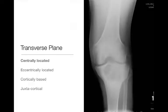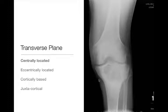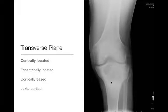In the transverse plane, we describe whether the lesion is centrally located — as in this case where we see a lesion centered in the proximal tibia — whether it's eccentrically located, cortically based, or juxtacortical. Here we have a geographic lytic lesion with a narrow zone of transition and a non-sclerotic border, centered in the proximal tibia in the metaphysis and extending into the epiphysis. This is an example of a centrally located lesion.